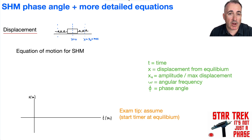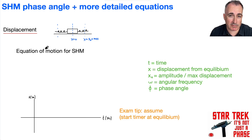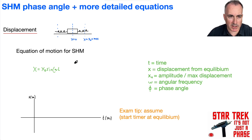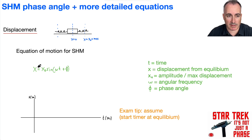We've got an equation that defines the motion for simple harmonic motion in terms of displacement. It goes: x equals x₀ sine of (ωt + φ). That plus φ is the new thing.